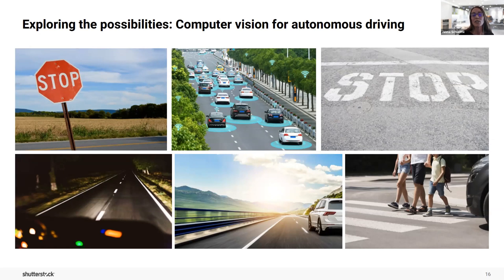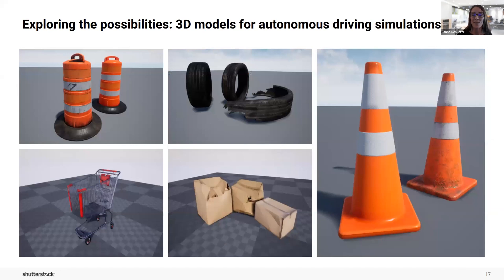You'd want your dataset to include objects or scenes that are important for your specific project — from stop signs to a view from a driver's perspective, or images of pedestrians. Oftentimes, researchers would like to test their autonomous driving software in an environment that would not be safe to simulate in the real world.